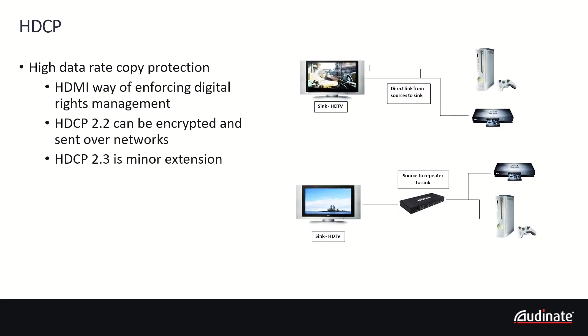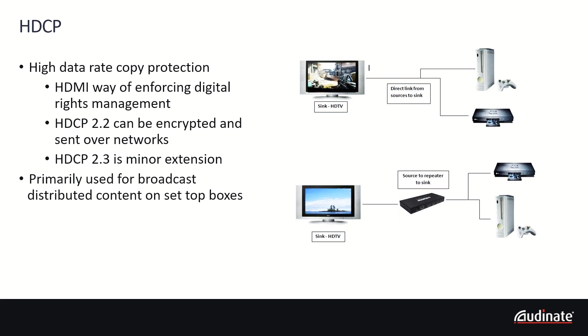High Bandwidth Digital Content Protection, or HDCP, is a form of digital copy protection designed to prevent the copying of audio and video signals over HDMI or other connections. HDCP is administered by the DCP, the Digital Content Protection, a subsidiary of Intel. The current version is 2.3, which is a minor update upon the previous version of 2.2.